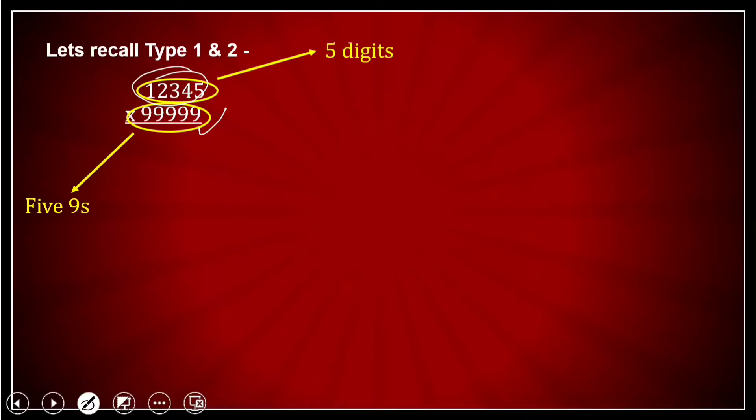And what was the method like? I took these two numbers. The first number, 12,345, I wrote on the left side and 99,999, I wrote on the right side. What I did was I subtracted one from here and I just wrote the answer below it.